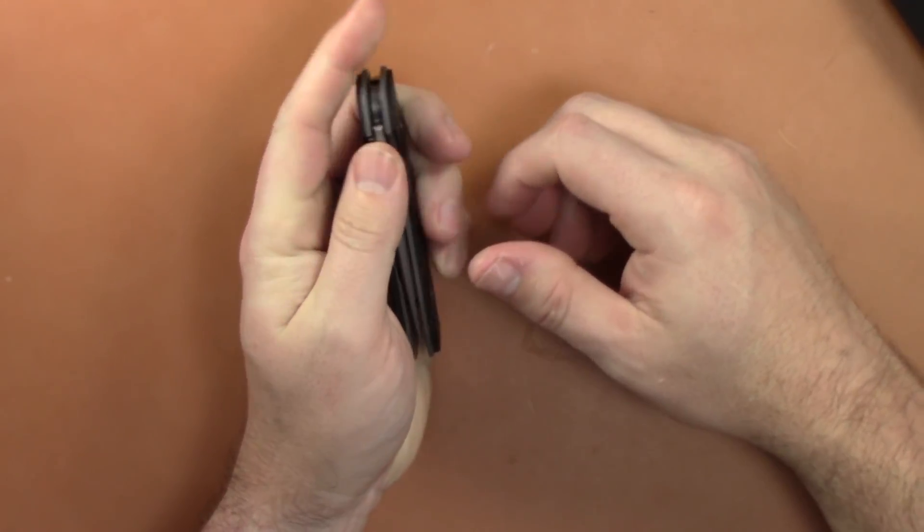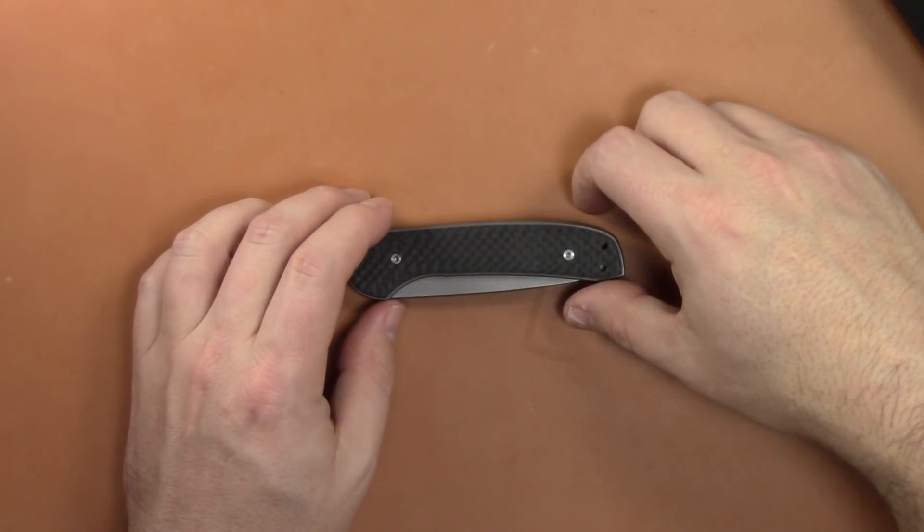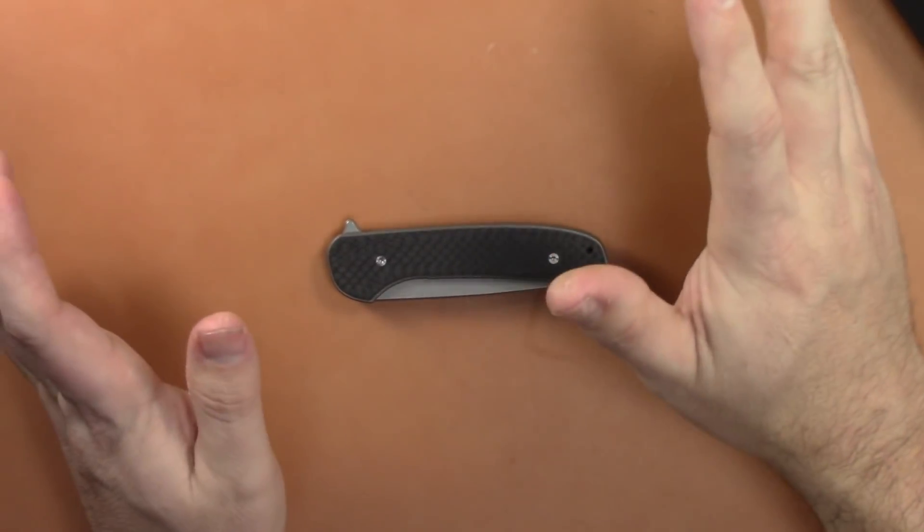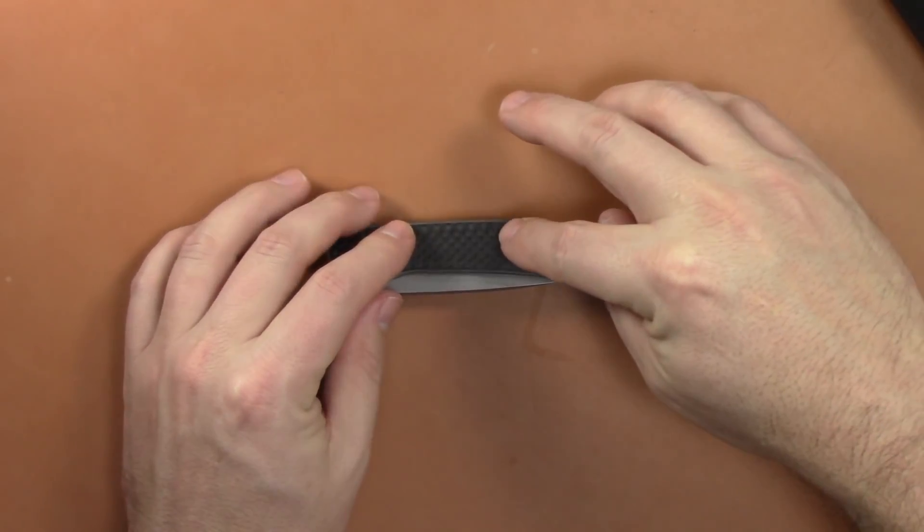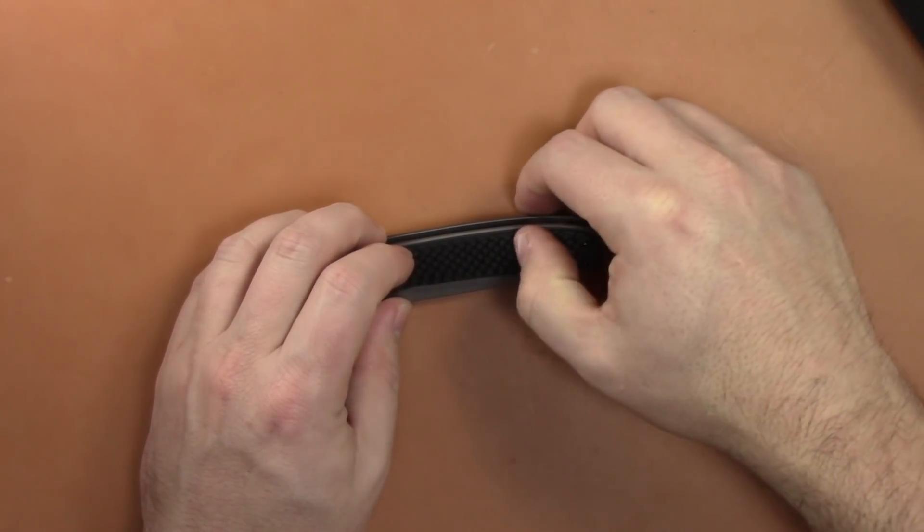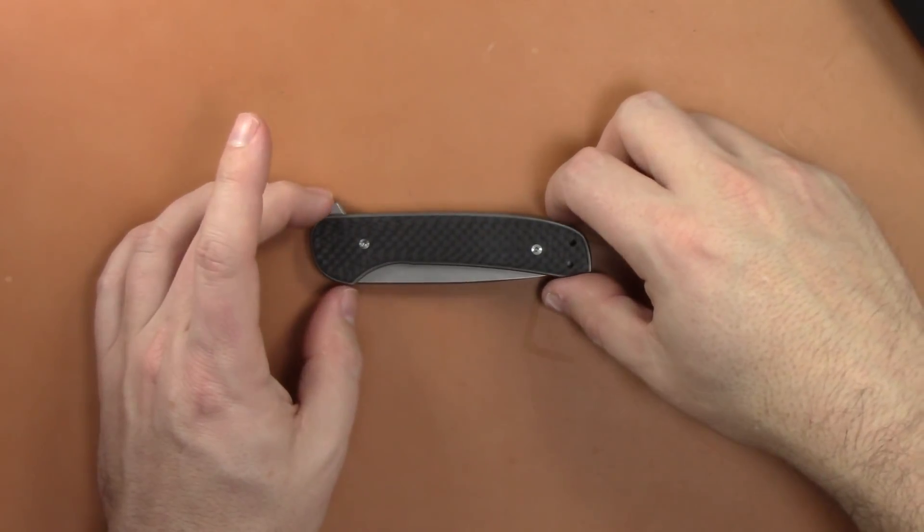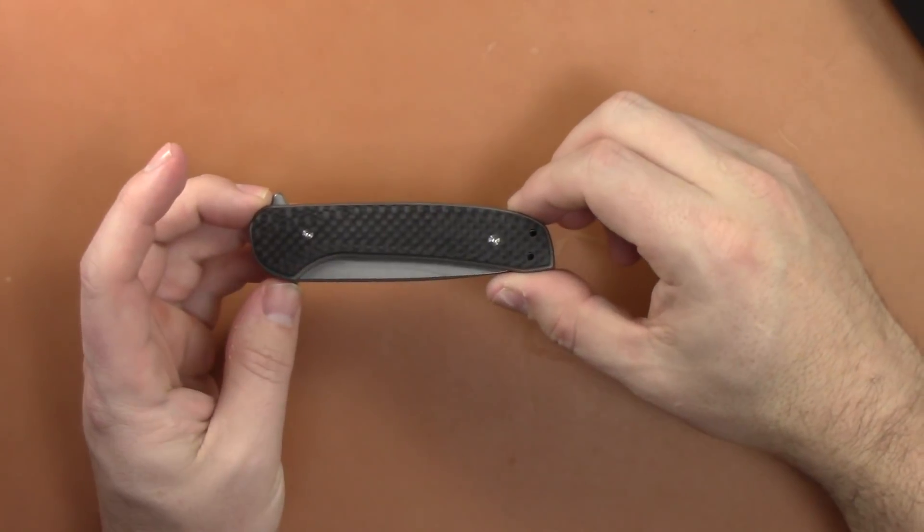At the time, the G10 version was 79 bucks on Amazon. Massdrop had done a few different knives with Ferrum Forge at this point - at least the Falcon, maybe the Crux had come out. I can't remember which ones came out first.